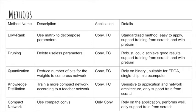Now let's take a look at the details of these methods. What is low rank decomposition? A conv layer is a matrix and we could do SVD or QR decomposition to the matrix. It could be applied to conv layers and also fully connected layers. It is a fairly standardized method and it's very easy to apply. It supports training from scratch and pre-training.